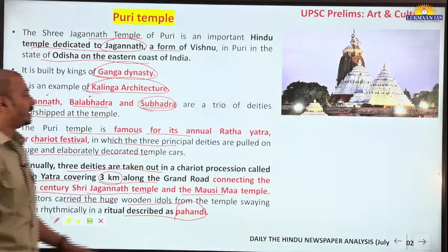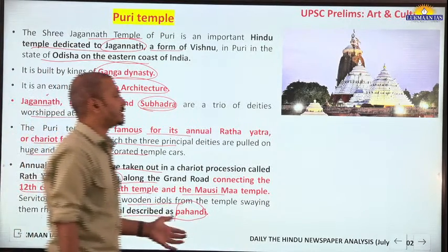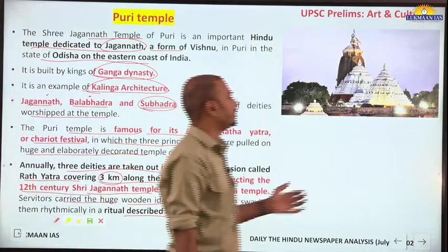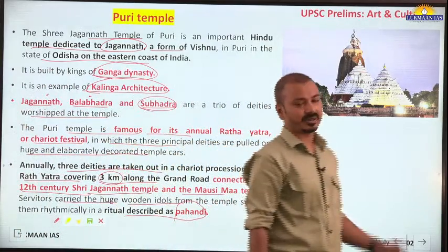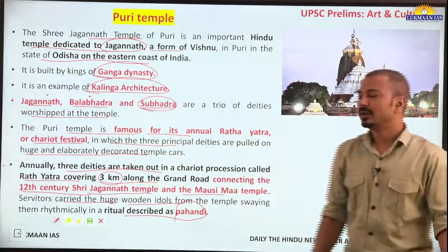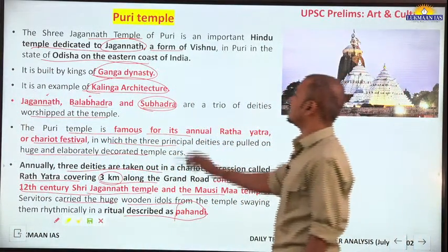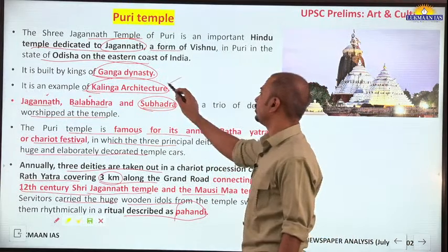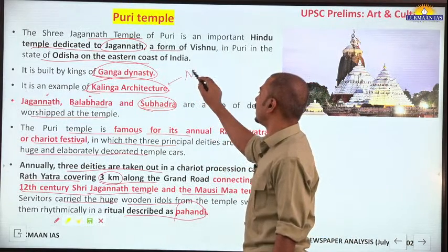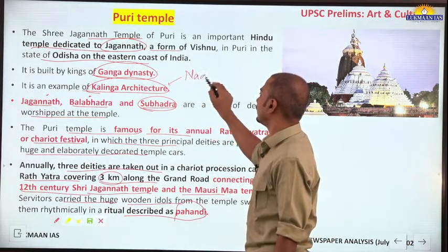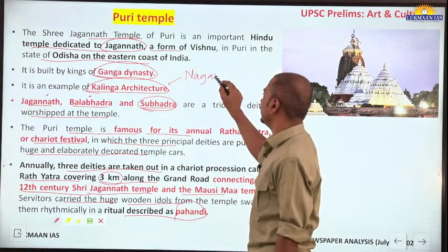The Puri temple is famous for its annual Rath Yatra or chariot festival, in which the three principal deities are pulled on huge and elaborately decorated temple cars. Annually the three deities are taken out in a chariot procession called Rath Yatra, covering three kilometers along the grand road connecting the 12th century Jagannath temple and the Mausi Maa temple. The servitors carry the huge wooden idols from the temple, swaying them rhythmically in a ritual described as Pahandi. The Kalinga style of architecture is a sub-type of the Nagara style.